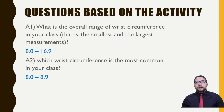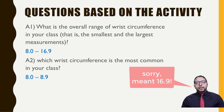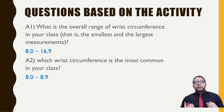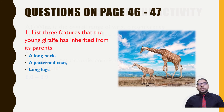The first activity question: what is the overall range of wrist circumference in the class? The smallest is 8 cm up to the largest, which is 18.9 cm. Which wrist circumference is the most common based on my results? The most common range is 8 to 8.9 cm, where it has four people.